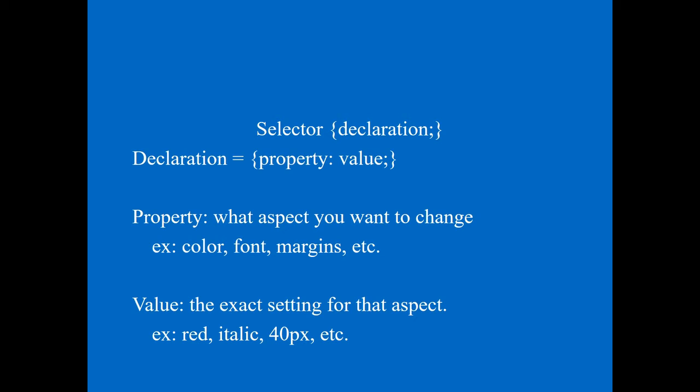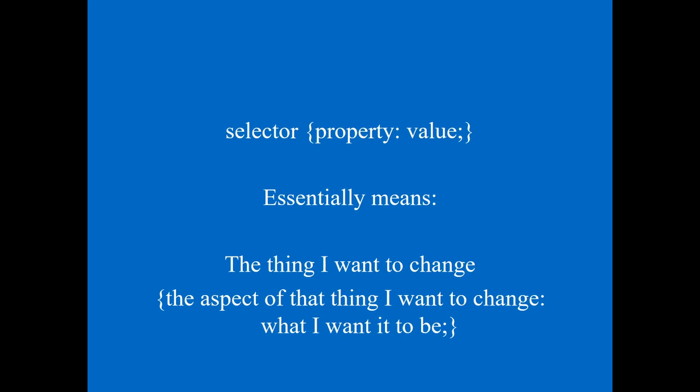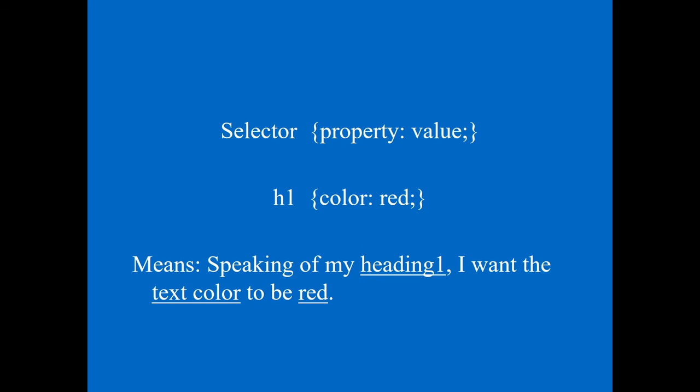So the structure is: selector, then declaration, inside the declaration property and value. The selector is the thing you want to change, the property is the aspect you want to change, and the value is what you want it to be. For example, selector h1, property color, value red.